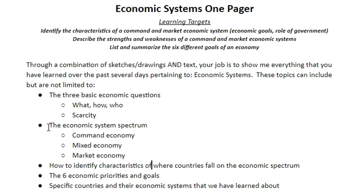The economic system spectrum: command on one end, market on another — those are the two theoretical ideals. The People's Grocery Store, Phil's Grocery Store — those are like the theories. All the way on one end is complete total government control; all the way on the other end is total freedom for the people. But everything is somewhere in the squishy middle.